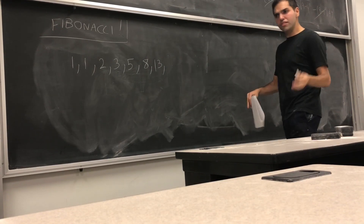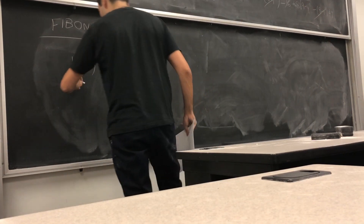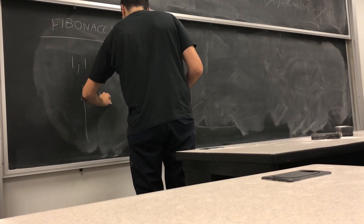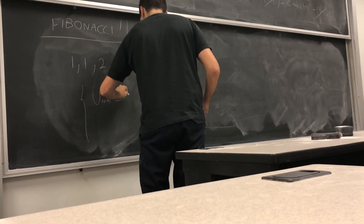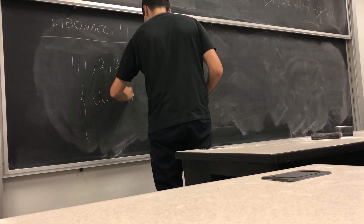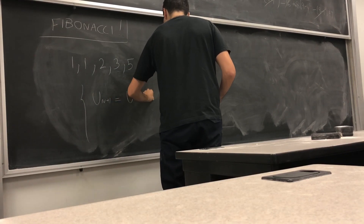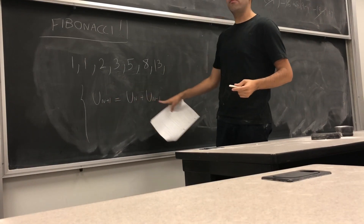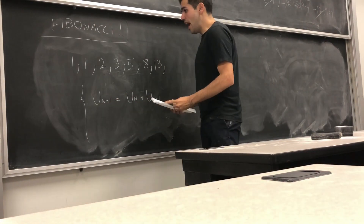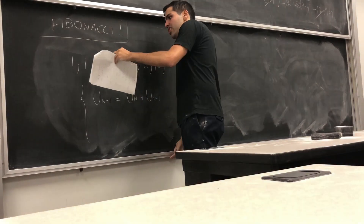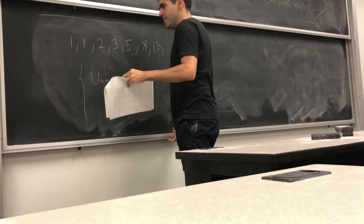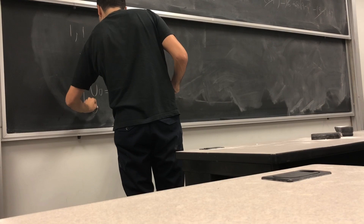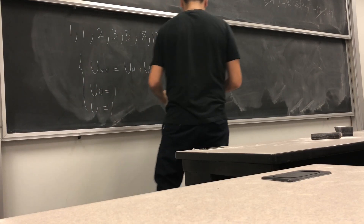Namely, consider a sequence of the following form. The next term u_{n+1} equals the current term plus the previous term. In other words, the next term is the sum of the two previous terms. And we said that initially u_0 equals 1 and u_1 equals 1.